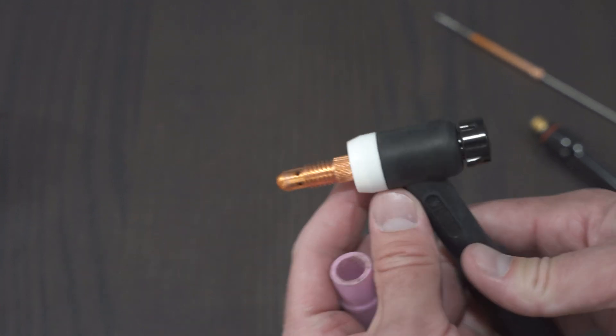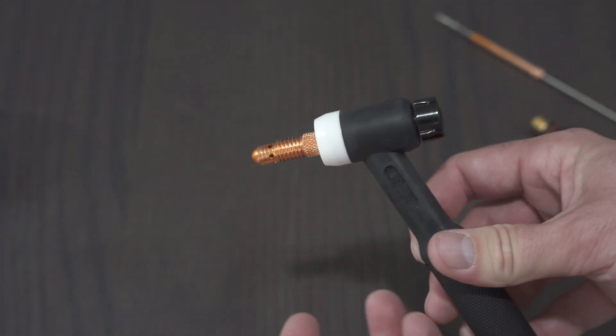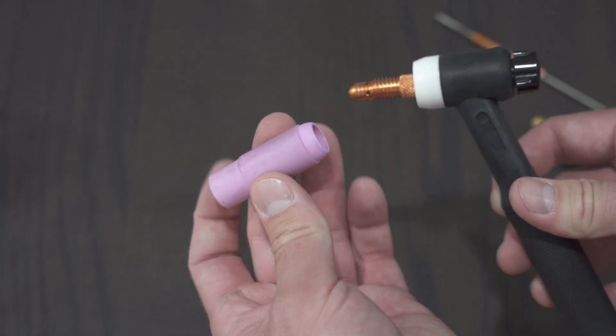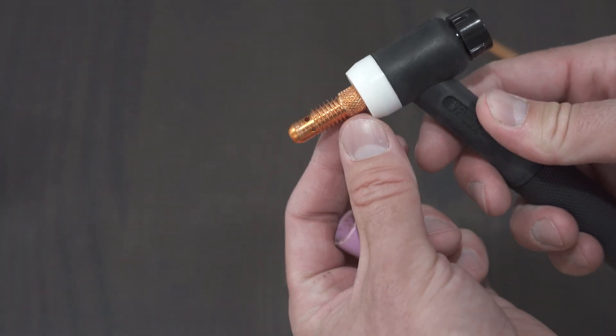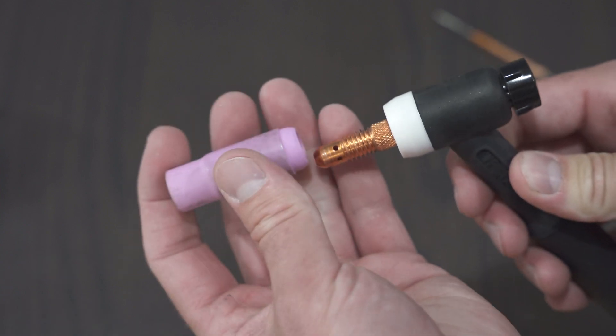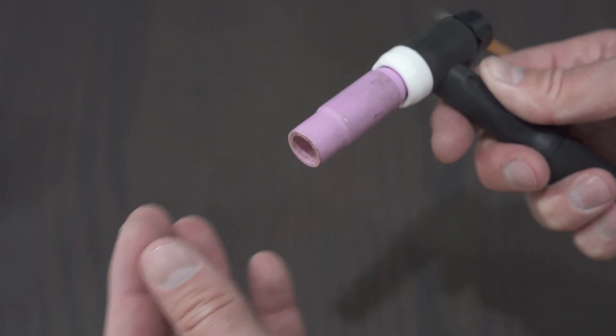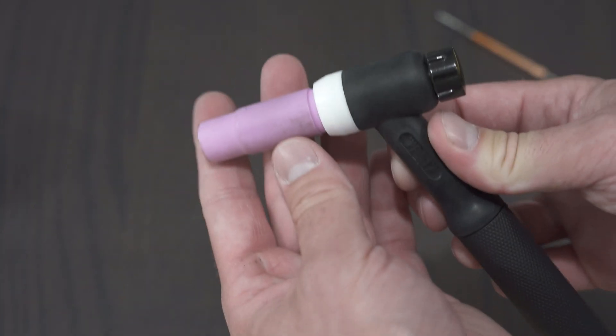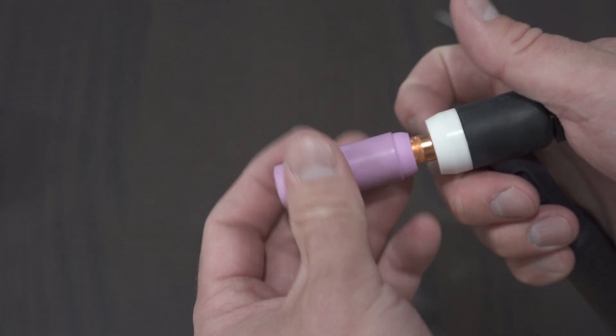This one happens to be a number seven but really the big difference is with the stubby gas lens kit. First is the stubby - you go from these long cups to a significantly shorter cup that I'll show you in just a second. And you go from having just these holes that the gas flows through and sprays against the inside of the cup and then just comes out in a random pattern.